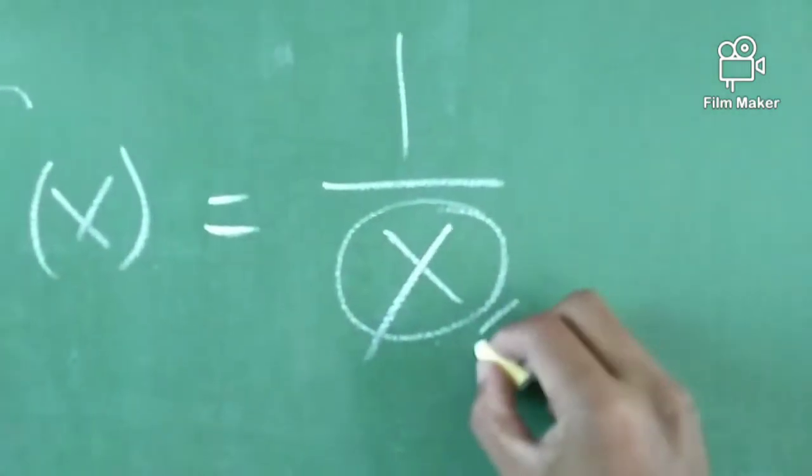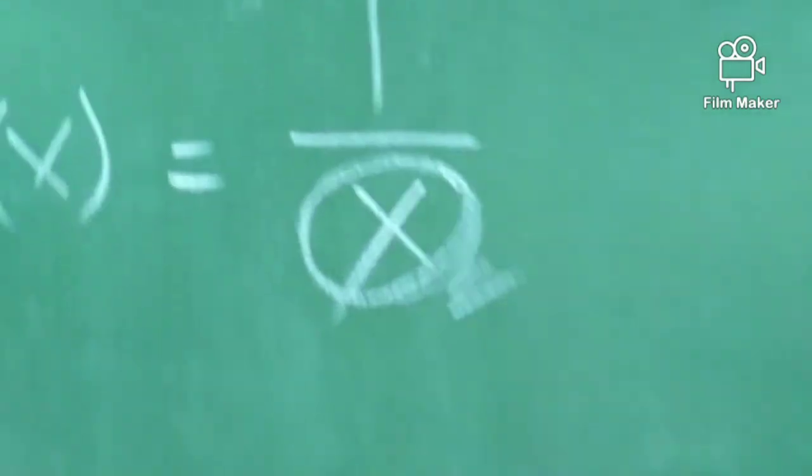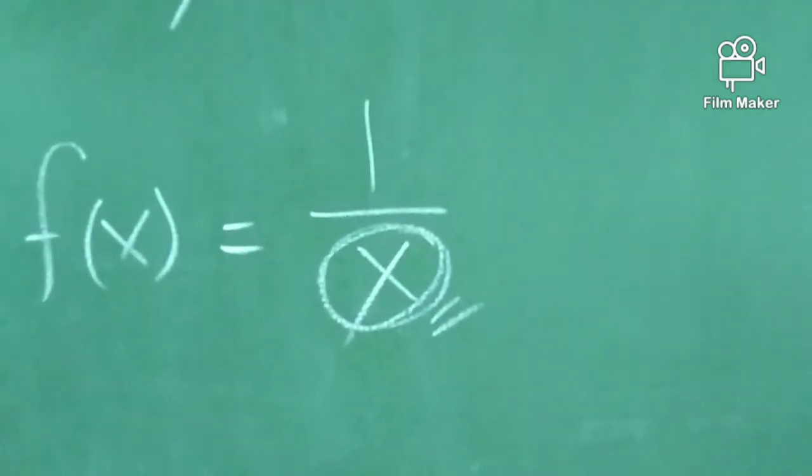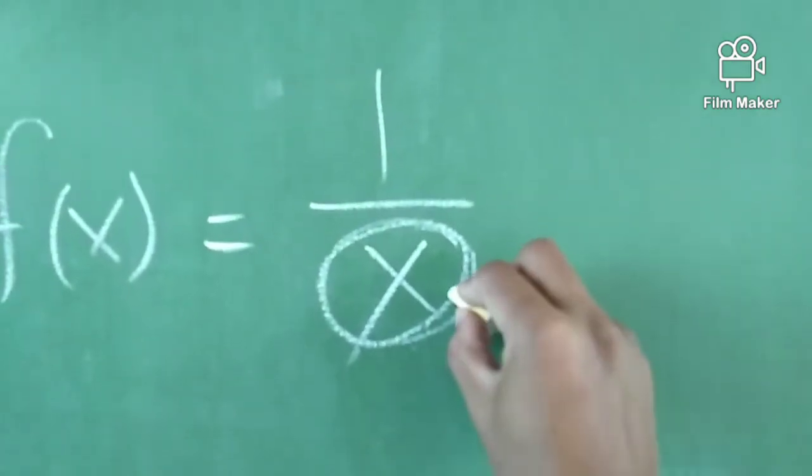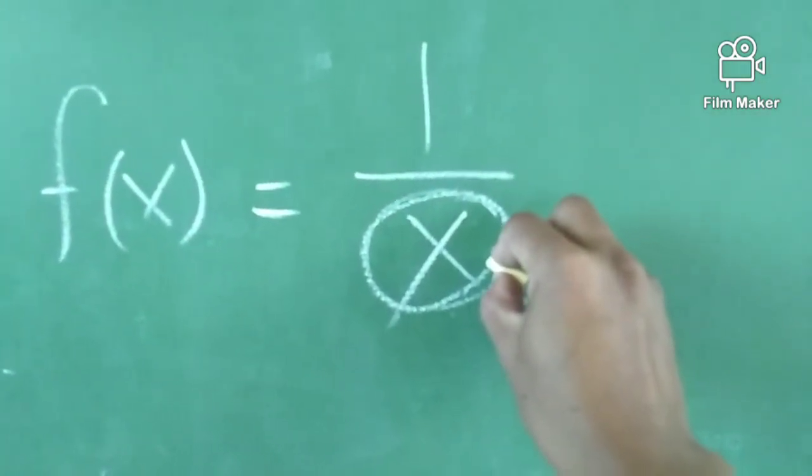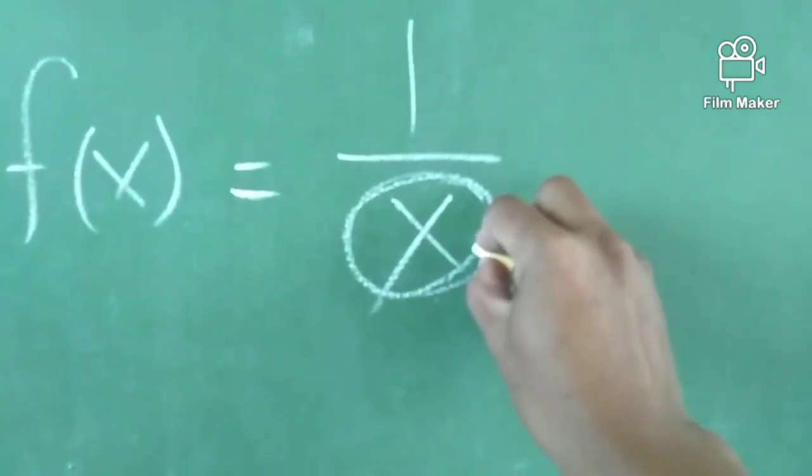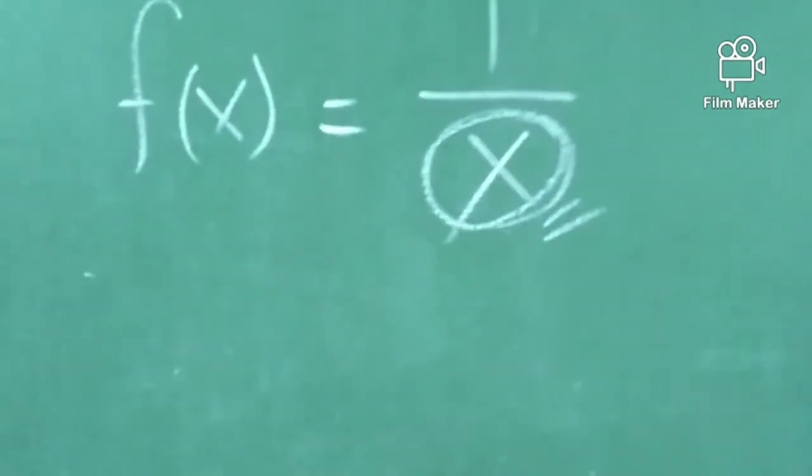With respect to x, it is in the denominator. So, one of the first things to remember to say it's not a polynomial function is: variables are not allowed in the denominator. Again, I repeat, variables are not allowed in the denominator.